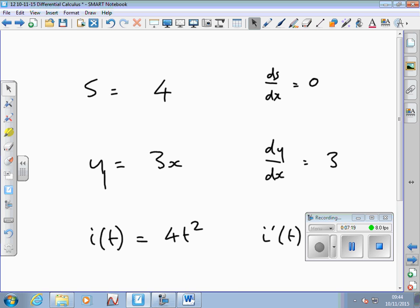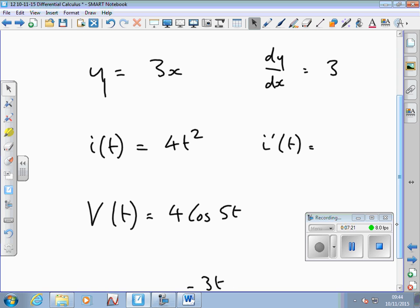And so for this next one, I bring the 2 down, times it by the 4, to get 8. Take one off the power, squared, back to 1. So I don't need to put the power 1, I just put 8t. And that's the answer. So if I want to know what the gradient of that function is any time, I just let t equal 0.1, as we did, or 0.2. Some value can work out the rate of change or the gradient.